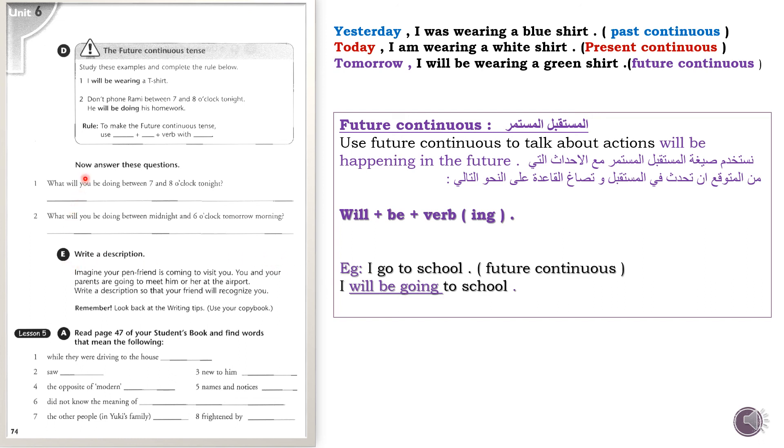As I told you, solve exercises 1 and 2 for me. Write these two points in your notebook with their examples. Write the rule, the distinction between tenses - past continuous, present continuous, and future continuous. Write the sentence and write the future continuous rule for me, and solve these two sentences here.